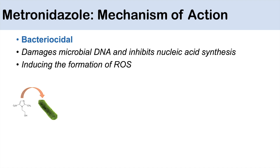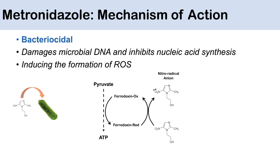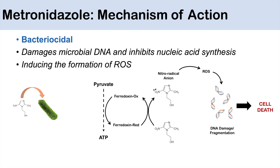However, it only has effects on killing anaerobes. In anaerobic bacteria, they use the pyruvate ferredoxin oxidoreductase system to process pyruvate into ATP. Ferredoxin can become reduced through this reaction. But when metronidazole is present, its nitro group acts as an electron sink — it takes electrons from ferredoxin, essentially oxidizing ferredoxin, to become itself a nitro radical anion. This nitro radical anion can then become a reactive oxygen species, which leads to DNA damage and fragmentation, destroying the anaerobe.